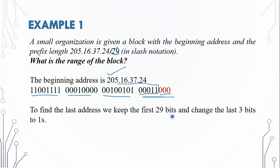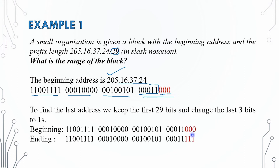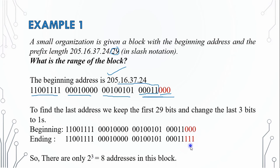To find the last address, we keep the first 29 bits and change the last 3 bits to ones. So the last 3 host bits become 111. The 3 host bits give us 2 to the power of 3, meaning there will be 8 addresses in this block.